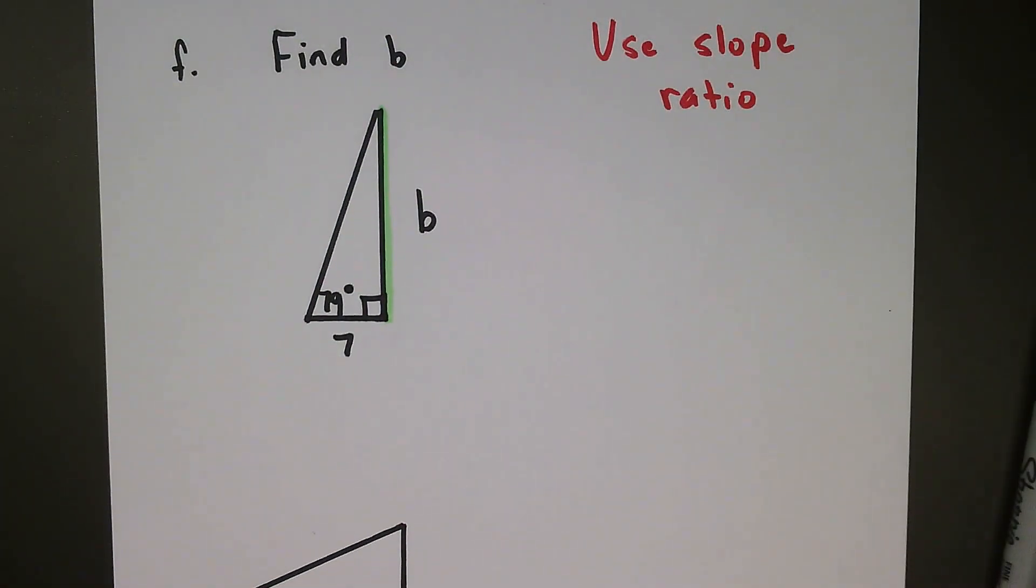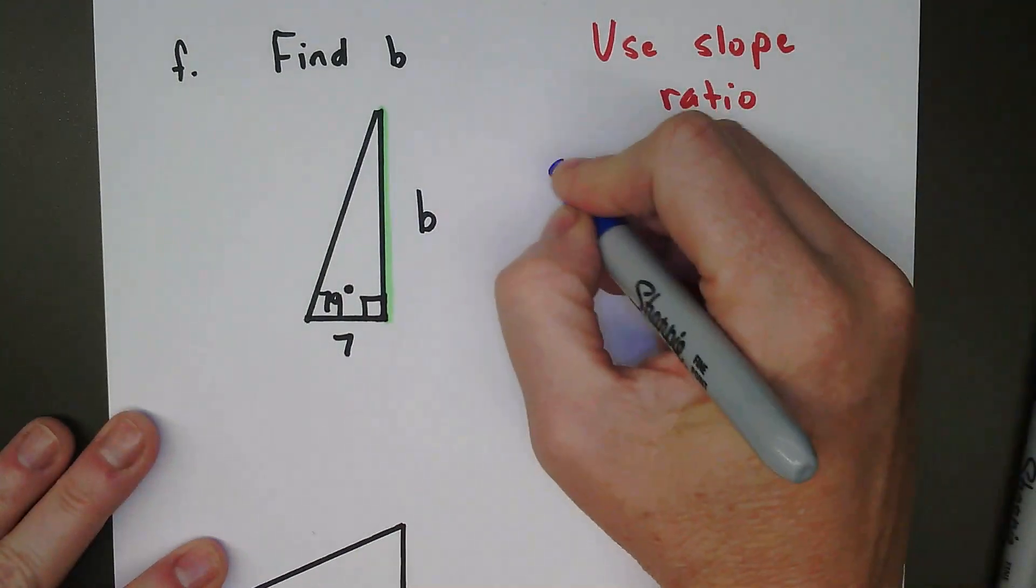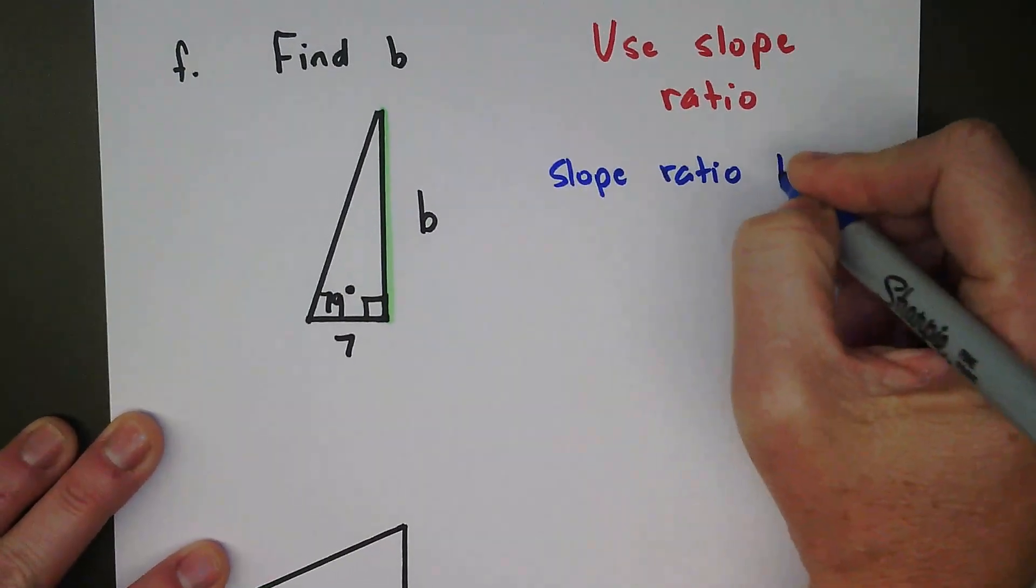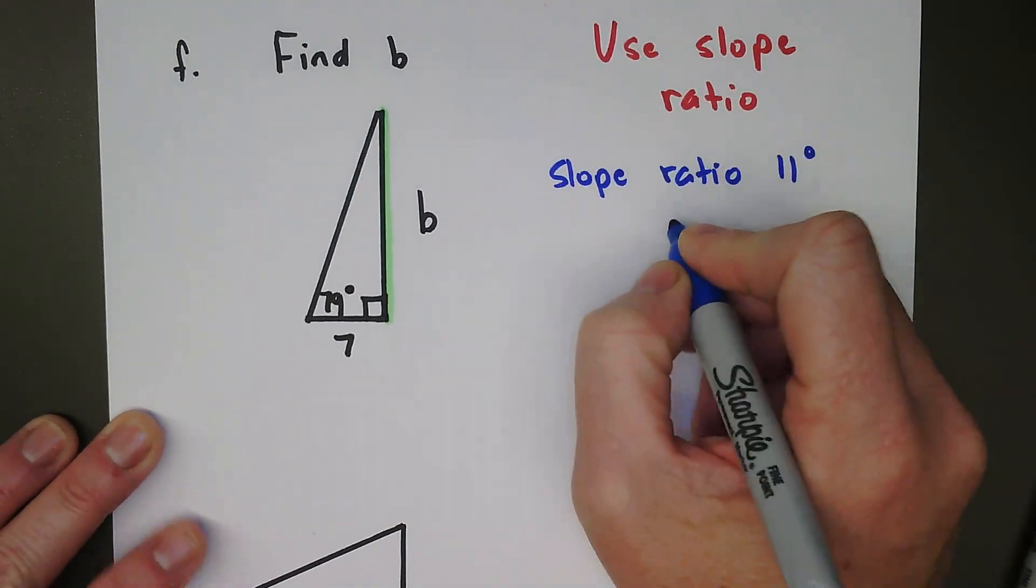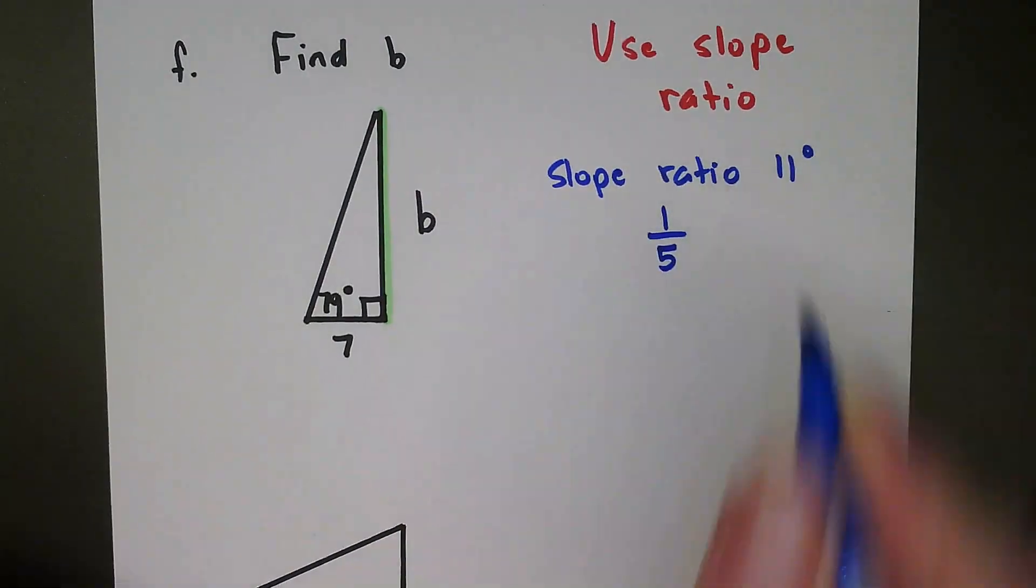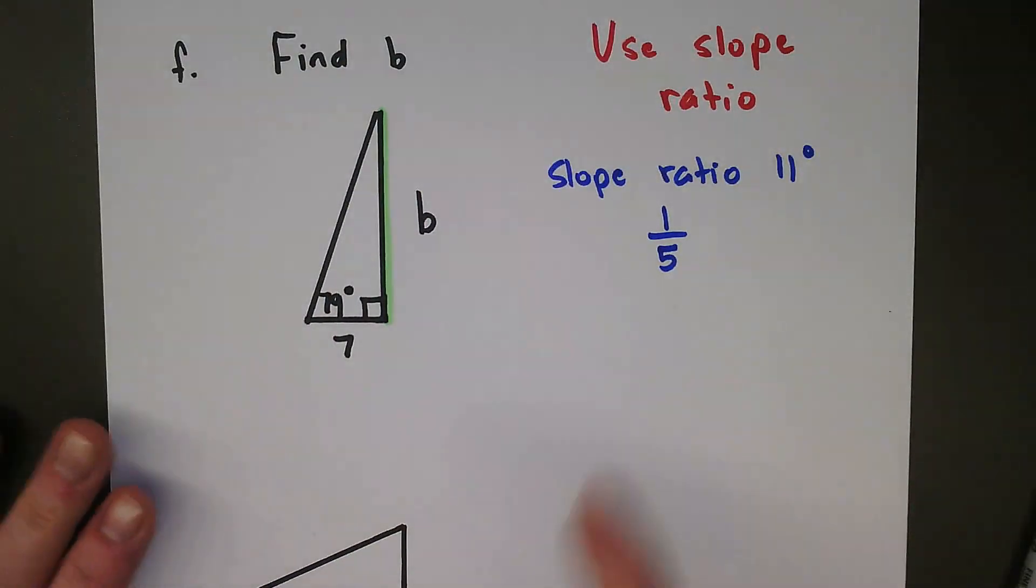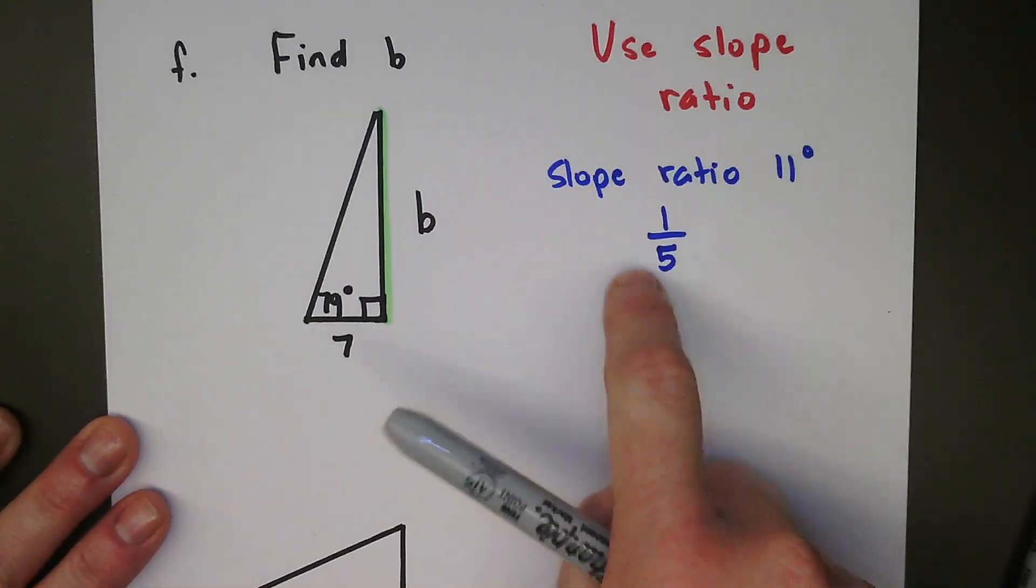At this point in the process, the only slope ratio that we knew was the slope ratio for 11 degrees. So the slope ratio for 11 degrees, and that slope ratio was 1 over 5. This is something that you either need to have in notes or have memorized. You probably can't solve the problem unless you know that.